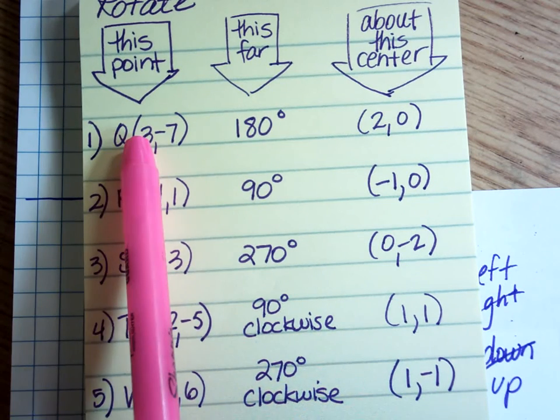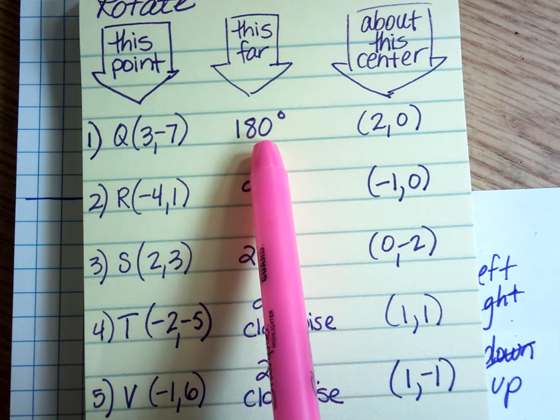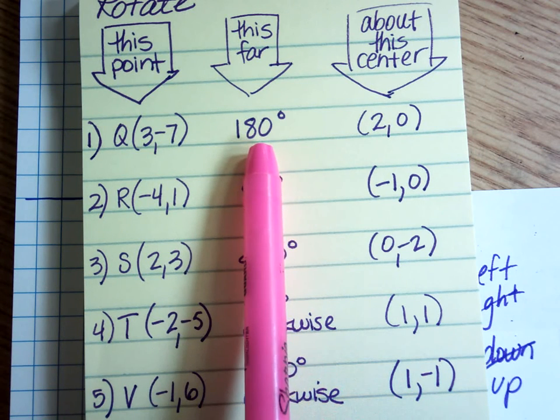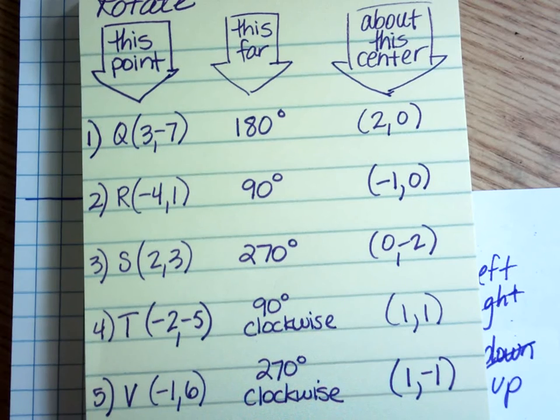Each one is saying here's your starting point, here's how far we're going to rotate it, and we're going to assume it's counterclockwise if it doesn't say. And then this is the center I want you to use. Notice that none of them are about the origin.